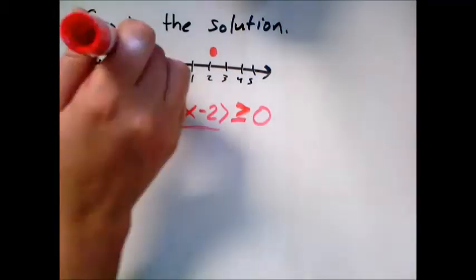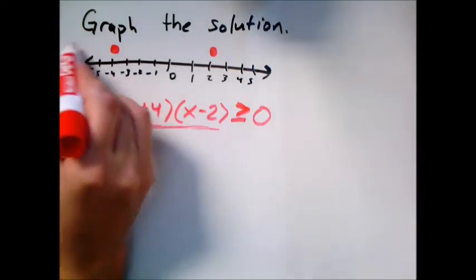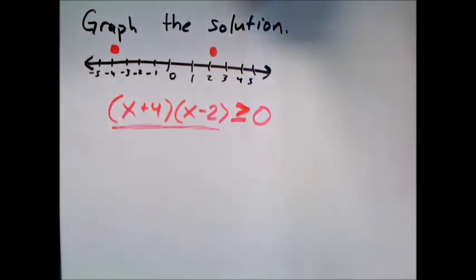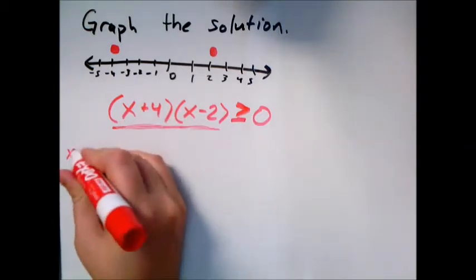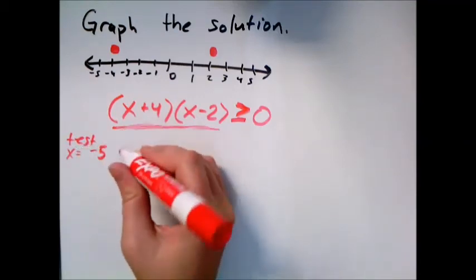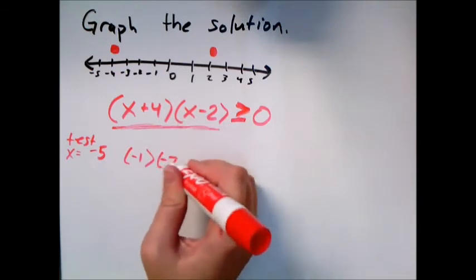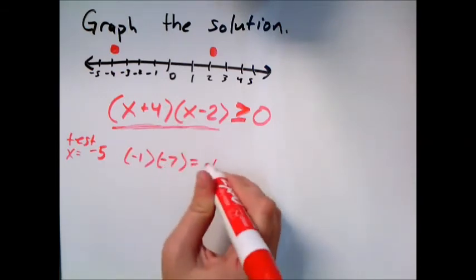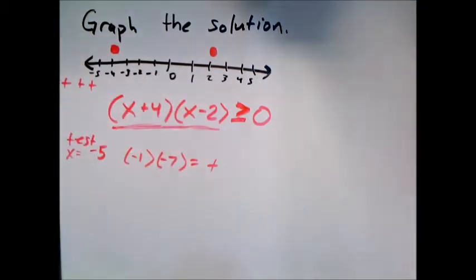The question is: do points to the left of negative four, between them, or to the right of two work? We can test points. Pick something smaller than negative four — say negative five. Negative five plus four gives negative one, and negative five minus two gives negative seven. Multiplying those gives a positive number, so the entire region to the left is positive.